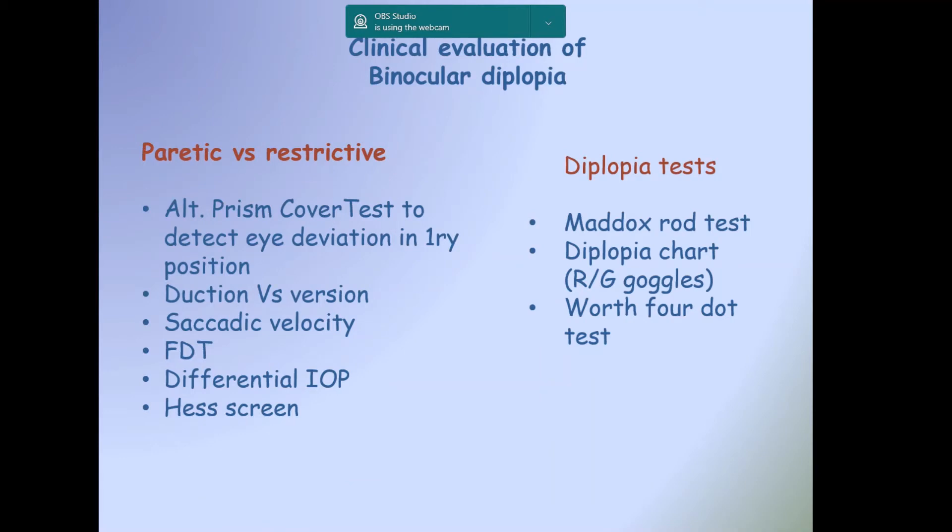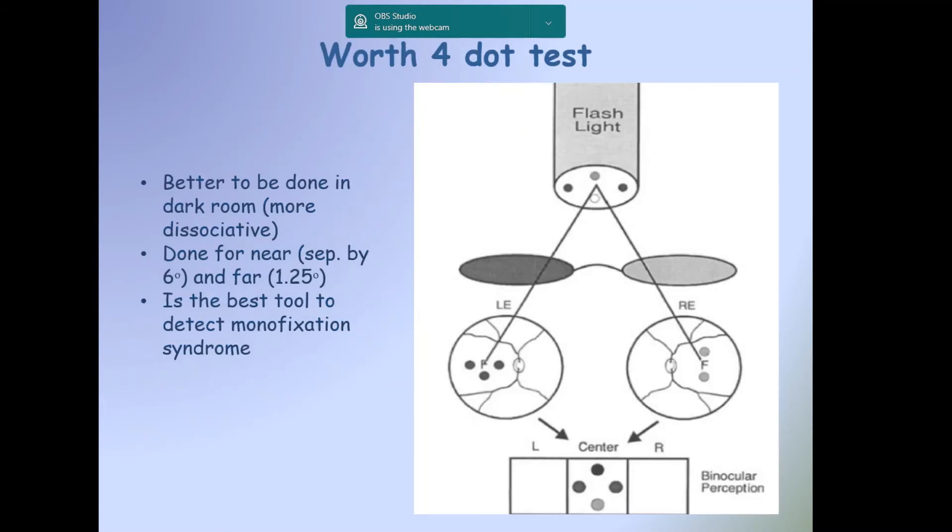Clinical evaluation of binocular diplopia can be classified into two sets of tests: Tests to differentiate paretic from restrictive, and tests to confirm the diplopia. Paretic versus restrictive could be differentiated by alternate prism cover test to detect eye deviation in primary position, ductions versus versions, saccadic velocity, forced duction test, differential IOP, and Hess screen. Tests to confirm include Maddox rod test, diplopia chart, and Worth's four-dot test.